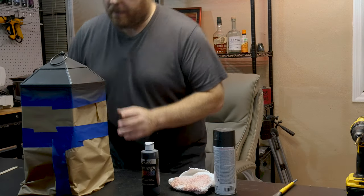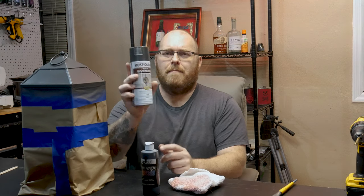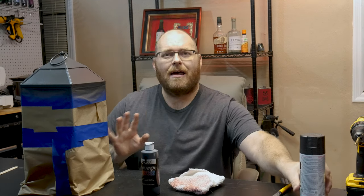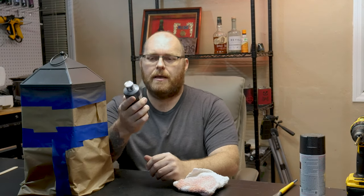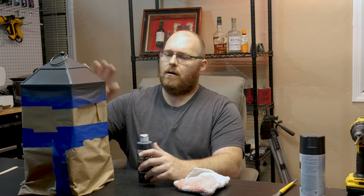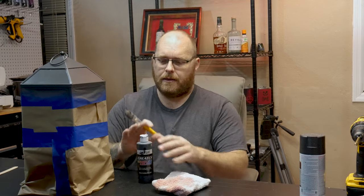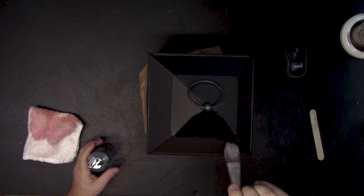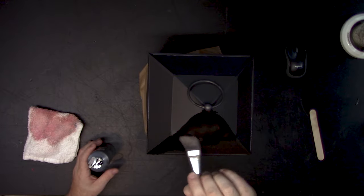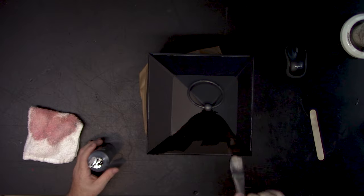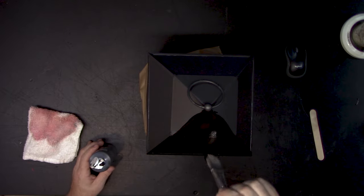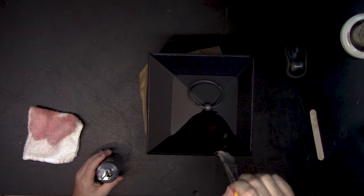We got this bad boy back. I went with this Rust-Oleum Matte Hammered, kind of like a steel color for the top. But I wanted it kind of distressed. So we're going to use this water-based paint. We're going to brush the water-based paint on and then wipe it off. We've got a brush, a rag, and the paint. Make sure we get all in all the cracks and crevices.